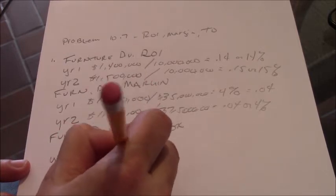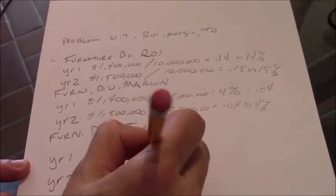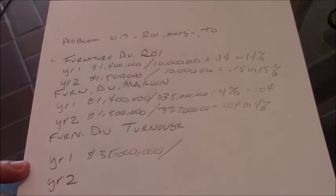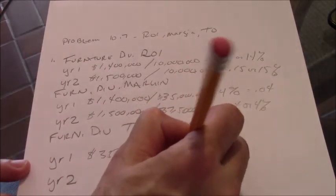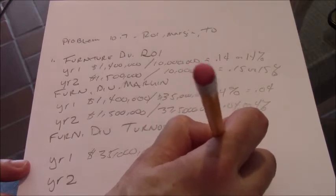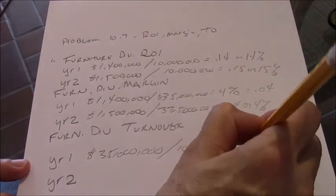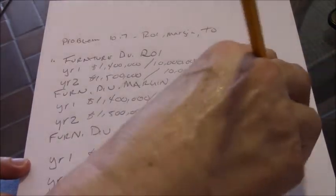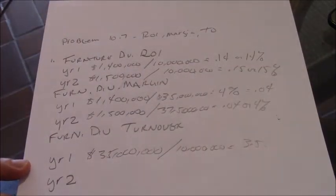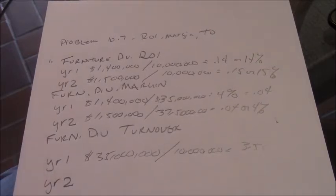And our assets of 10 million. And that is equal to 3.5. And so we turn over our assets 3.5 times. So that's pretty great.